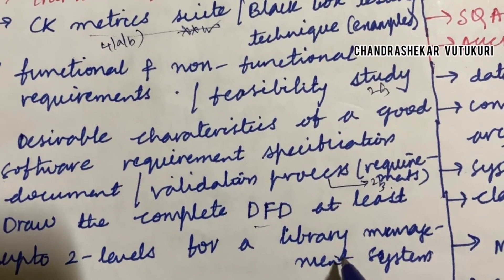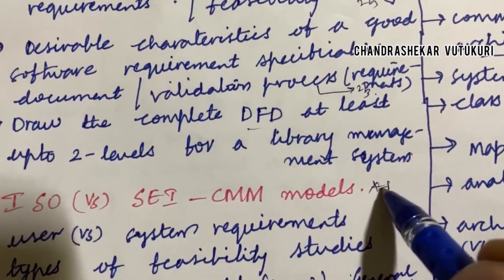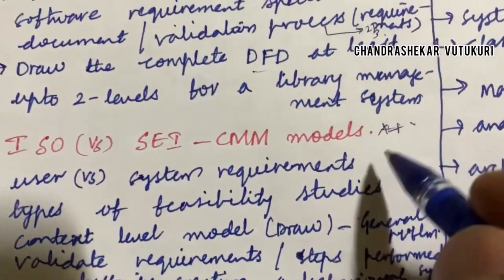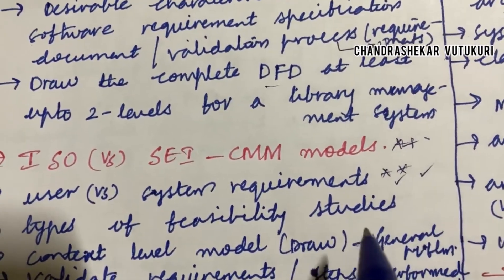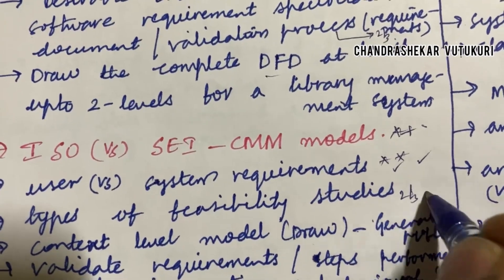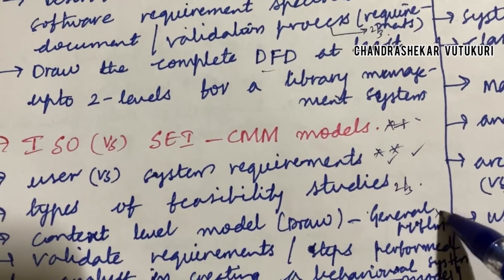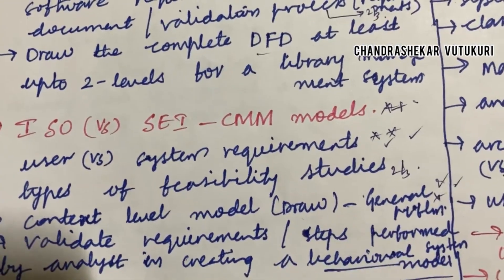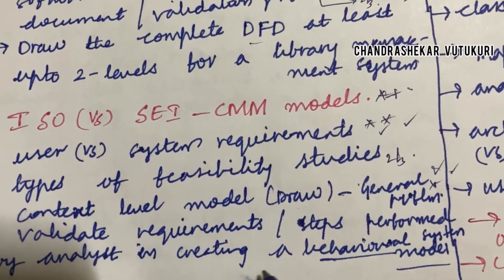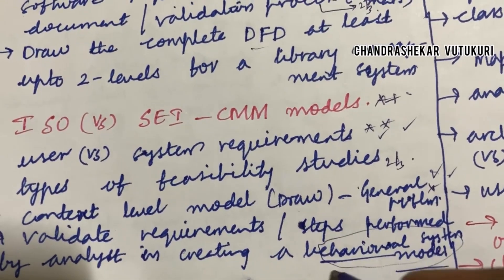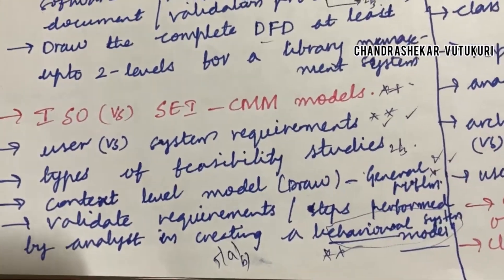Draw the complete DFD at least up to two levels for a Library Management System. ISO versus SE CMM models and their differences, user requirements and system requirements definitions and differences, types of feasibility study — may be a two mark question. Context level model: draw and the general problems will be asked. Validate requirements and the steps performed by analyzing in the behavioral model system — this is also a top most question. From this section you may be getting 5A as well as 5B.